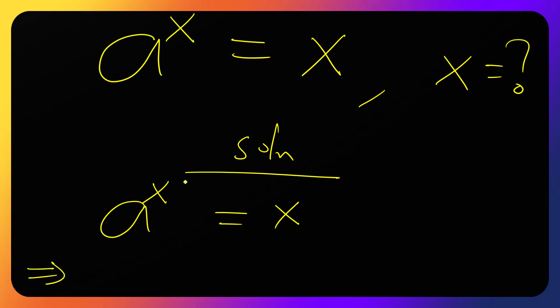First of all, let's bring the power down. So let's take natural log on both sides. So when you have t to the power m, the same as m ln of t. So this x will be x ln of a equals to ln of x.